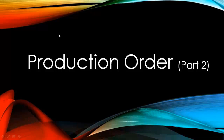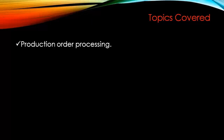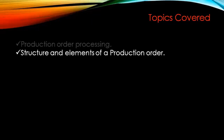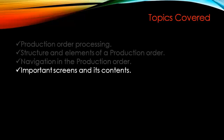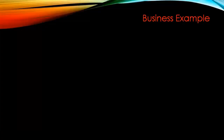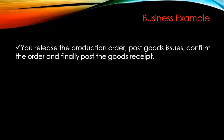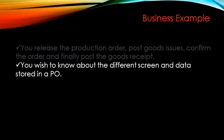Welcome to the second part of the production order tutorial. Today we're going to learn about production order processing structure and elements of a production order, navigation in the production order, important screens and their contents. The business example covers: release the production order, post goods issue, confirm the order, and finally post the goods received. I'll be showing you this full cycle — how the production order is processed in the SAP system and the different screens and data stored in a production order transaction.